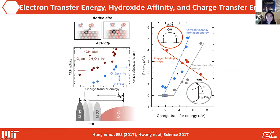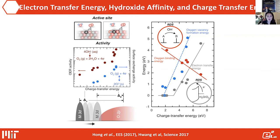As we reduce the charge transfer energy by moving metal D states into the oxygen P band, we see increased activity in oxygen evolution—whether at the oxide-oxide interface or the oxide-solution interface. The fundamental reason is that reducing charge transfer energy reduces the barrier for electron transfer. Once the oxide becomes metallic, the oxygen evolution reaction is actually limited by the deprotonation reaction associated with OH⁻ ions in basic solution—it's the approach of OH⁻ ions to a negatively charged surface to deprotonate and generate oxygen.